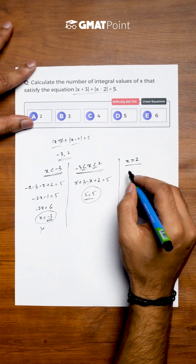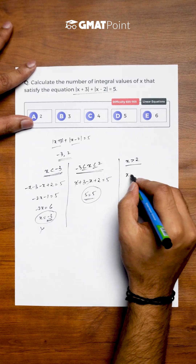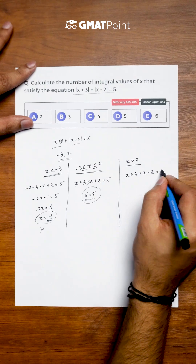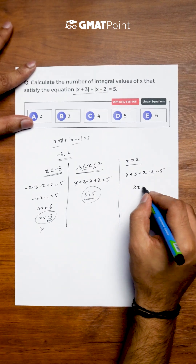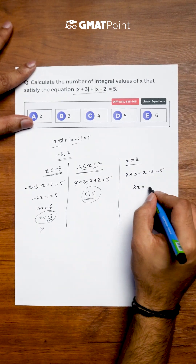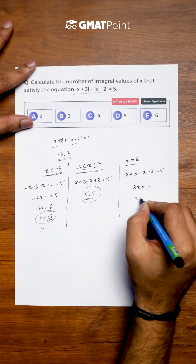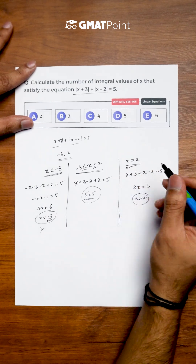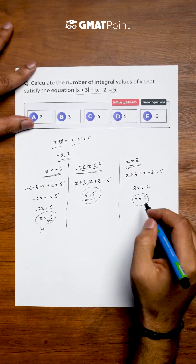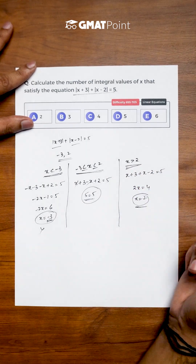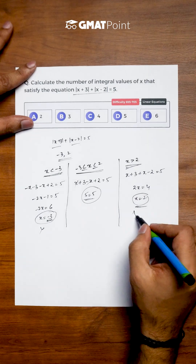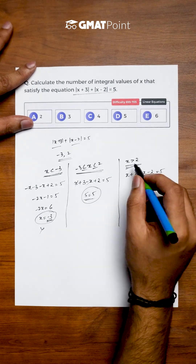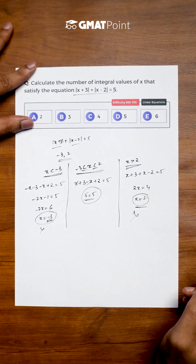For x greater than 2, the equation becomes (x+3) + (x-2) = 5, giving 2x = 4 and x = 2. Since our assumption is x > 2 but we obtain x = 2, there exists no value of x greater than 2 that satisfies this equation.